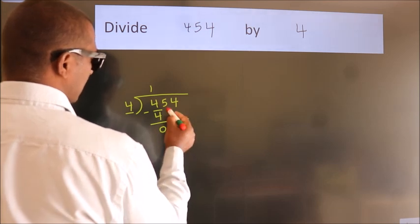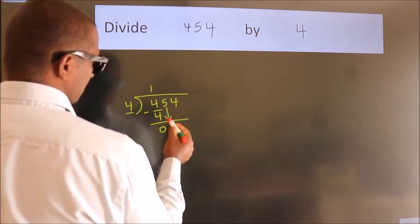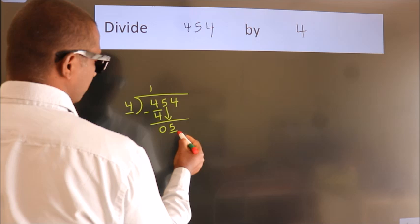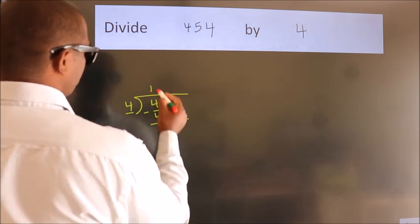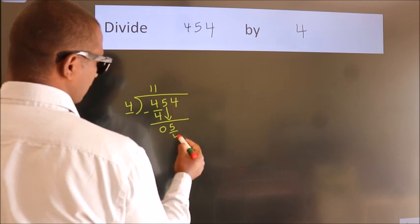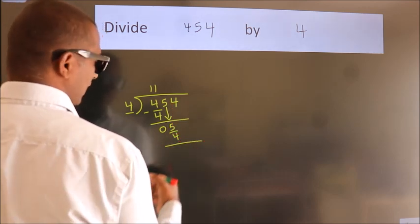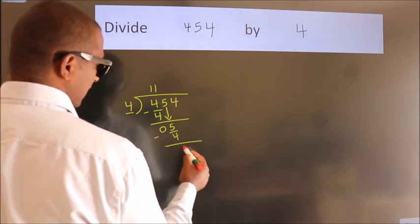After this, bring down the beside number. So, 5 down. A number close to 5 in 4 table is 4 once, 4. Now, we subtract. We get 1.